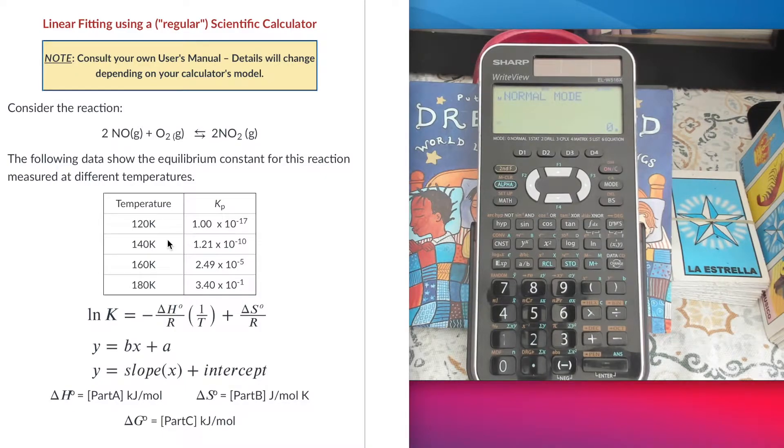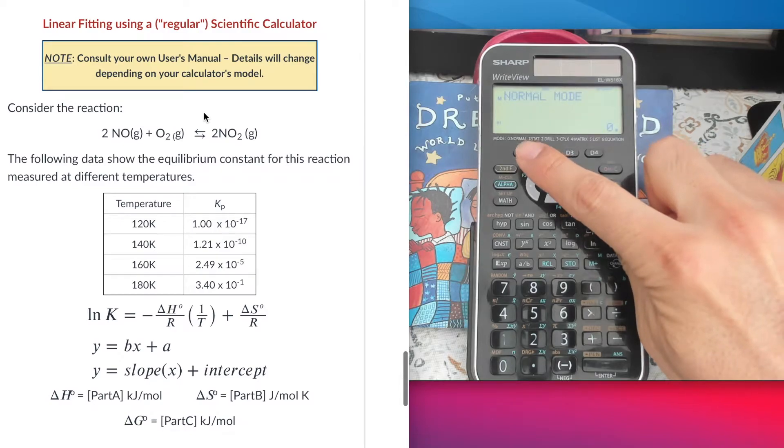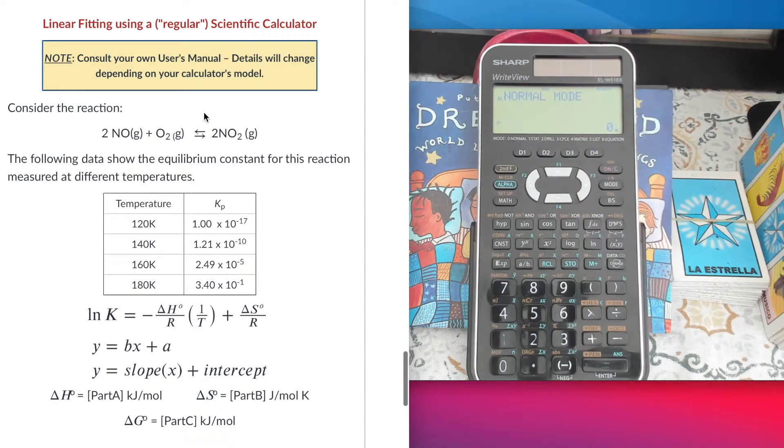The only thing that you have to check is look at your user's manual and make sure that your calculator has this mode, a statistics mode. This is the one that I'm going to be using, number one here.